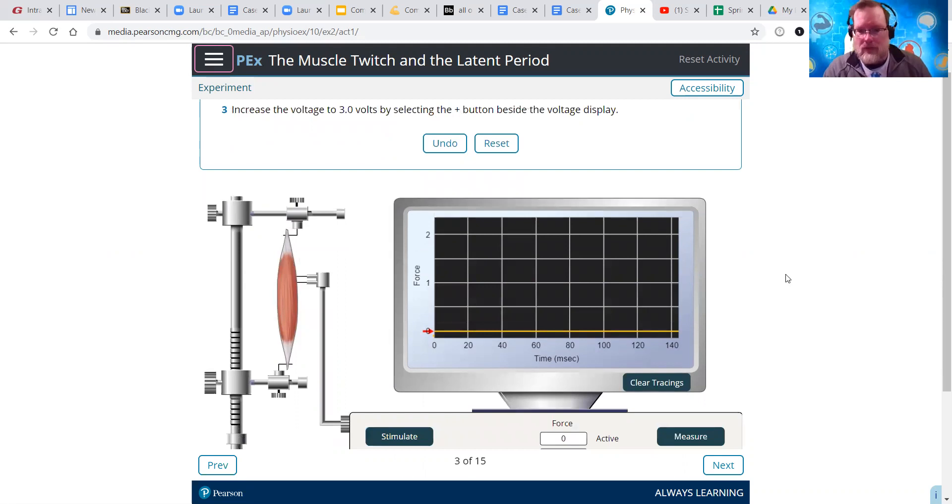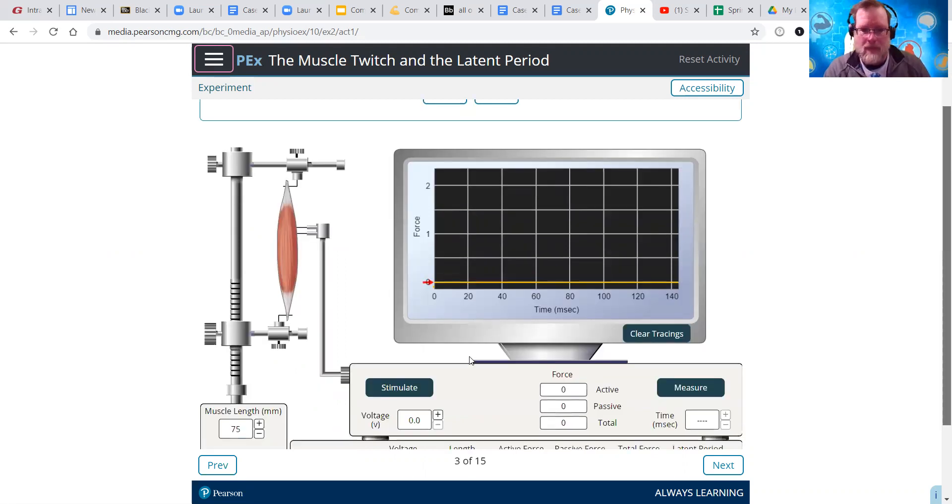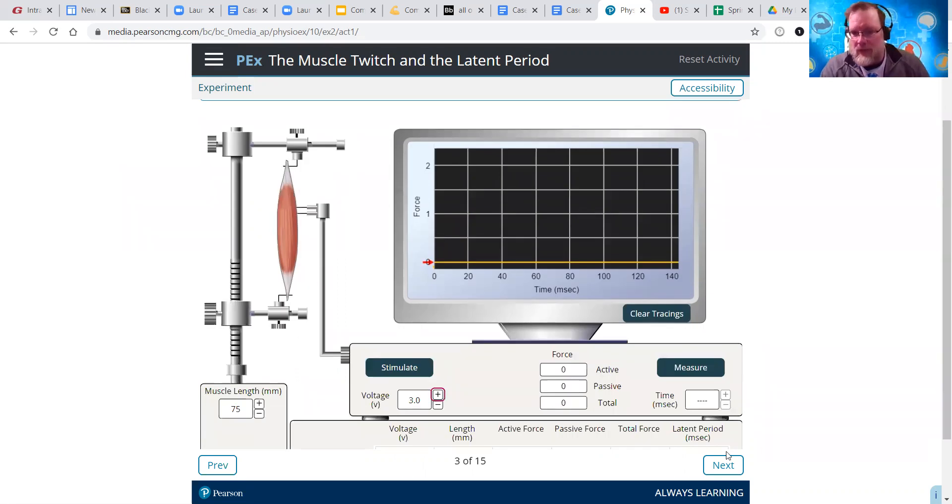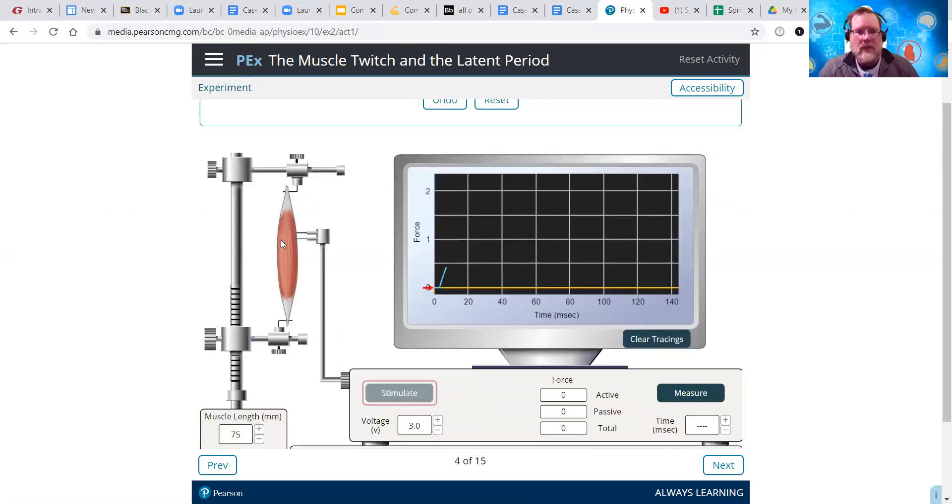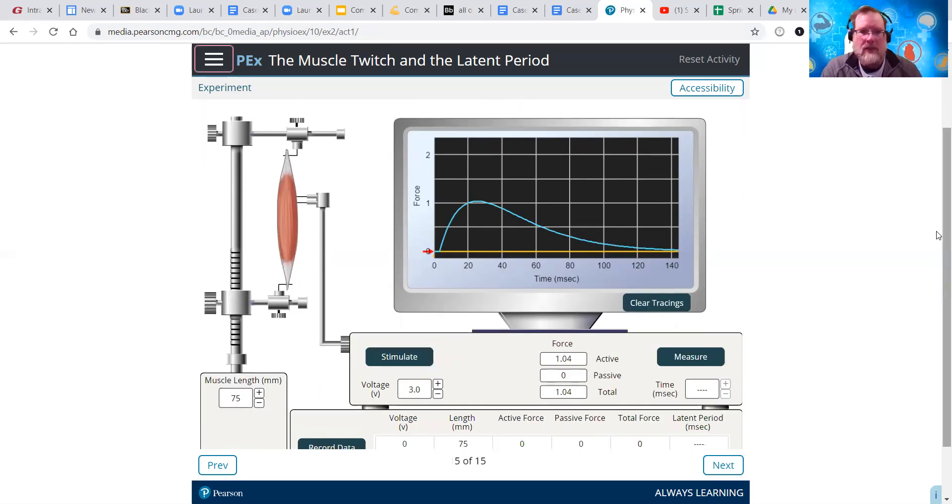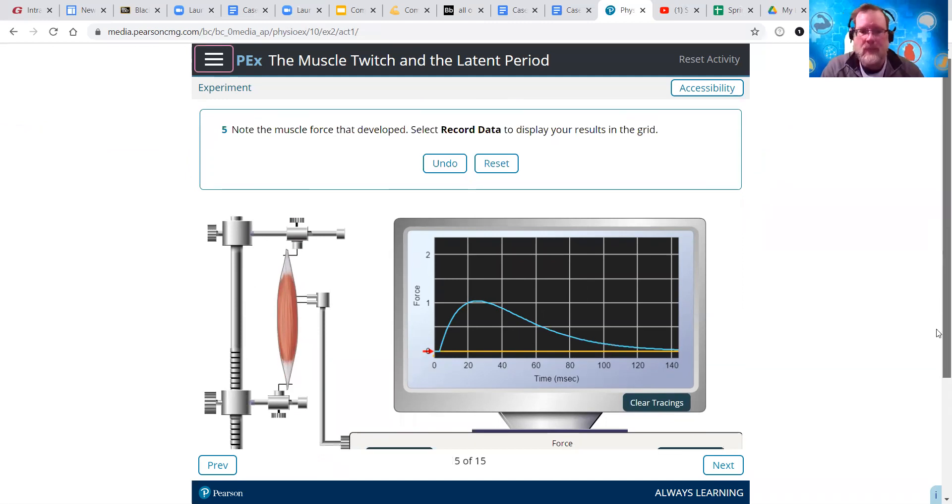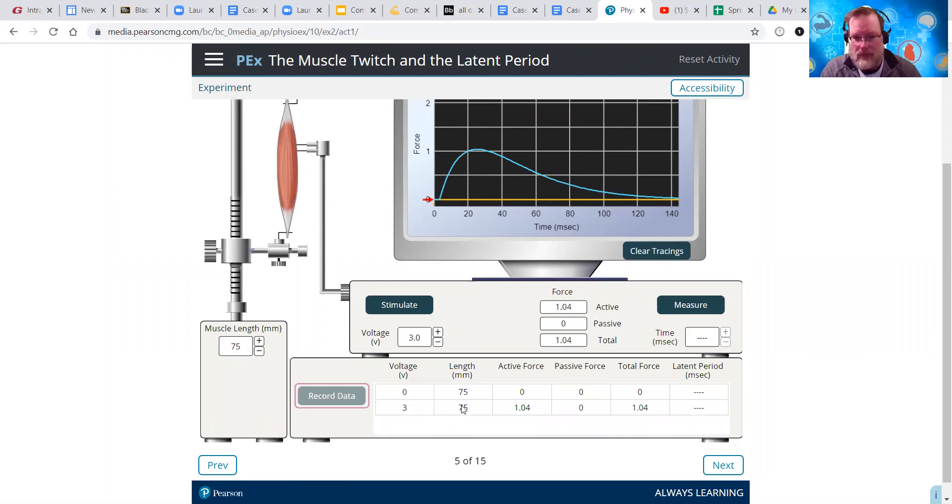Now we're going to increase the voltage to three. It's not going to say anything. We just move it to three. We click next, and then it's going to tell us to click stimulate. So, we gave it a little jolt, and we got a muscle contraction and a relaxation. So, then we hit next, and it's going to tell us to record the data. We come down here, click record data. So, we gave it three volts. It was 75 millimeters. Active force generated that's measurable was 1.04 total force, 1.04.